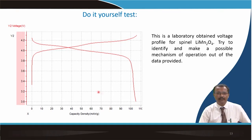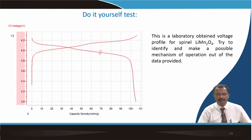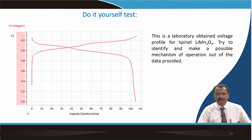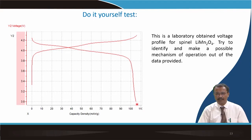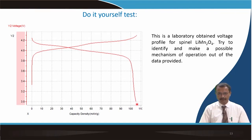I have given a typical charge-discharge profile of lithium manganese oxide, a well-known spinel. Based on the lectures discussed so far, you can try to identify and provide a possible mechanism of operation: what is happening during charging up to a certain point, what is happening during each plateau, and what is happening during discharge at each feature. Based on the discussion, I leave it to you to provide an explanation and come up with your answer.